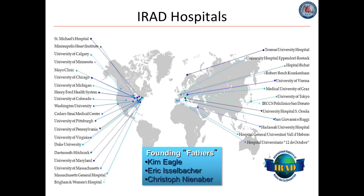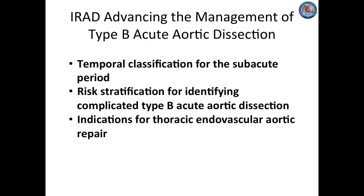Data from IRAD have identified basic risk factors including bicuspid aortic valve, Marfan syndrome, male gender, age greater than 60, and hypertension. In our review, we addressed three areas in which IRAD data has recently advanced our understanding of acute type B aortic dissection: temporal classification especially for the subacute time period, risk stratification for identifying complicated cases, and indications for thoracic endovascular aortic repair.